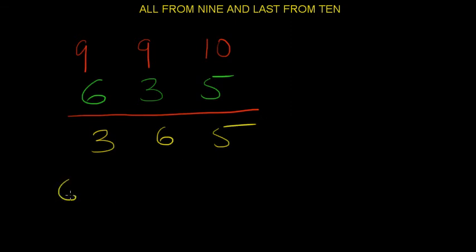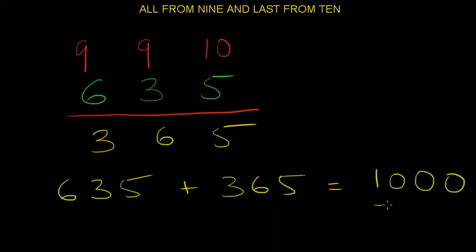So, 635 plus 365 is 1,000. Now, if somebody randomly throws you, okay, what is 635? What do you need to add into 635 to get to 1,000?